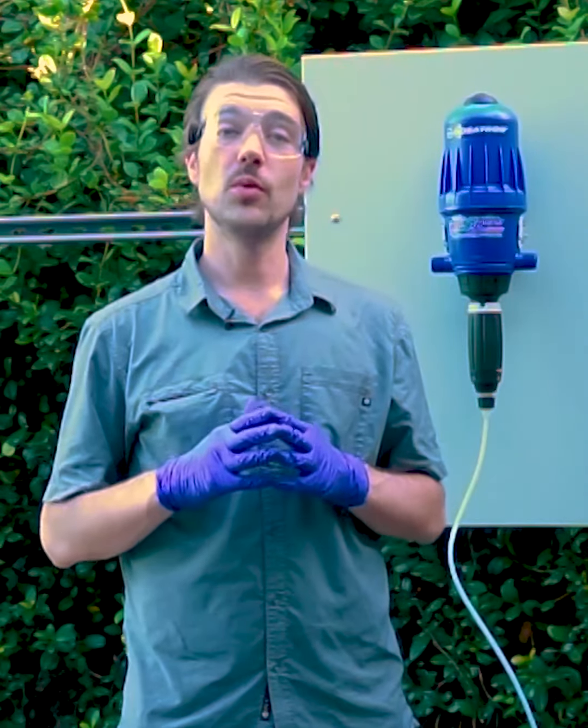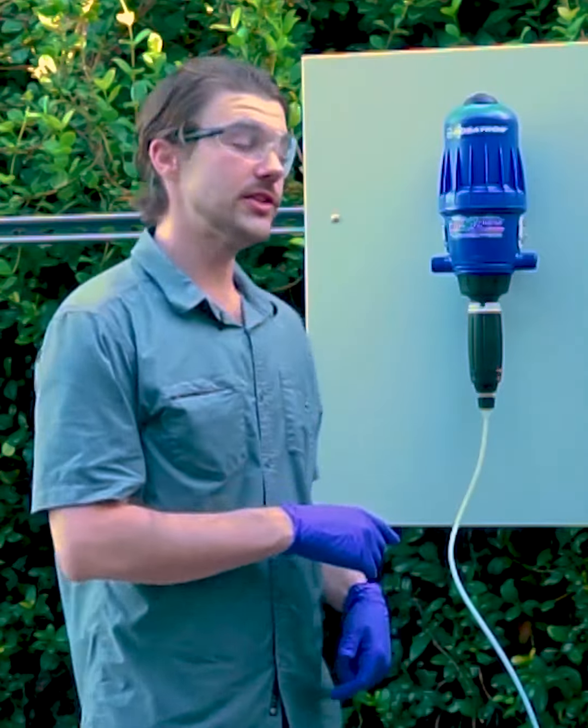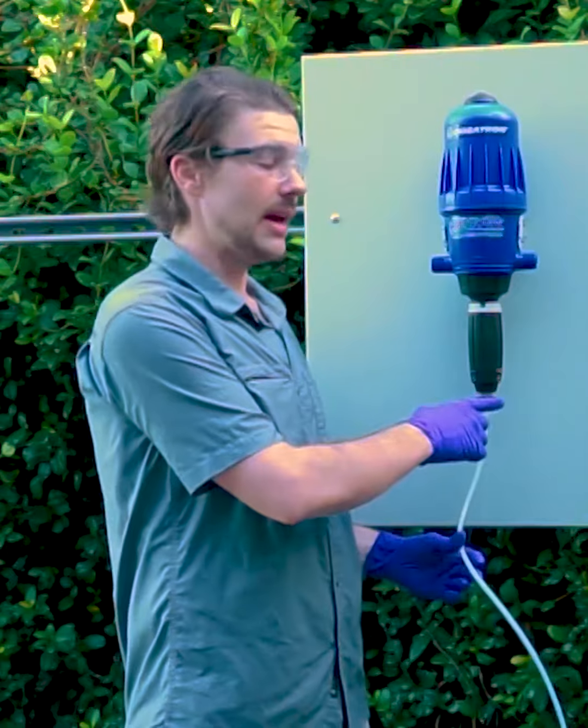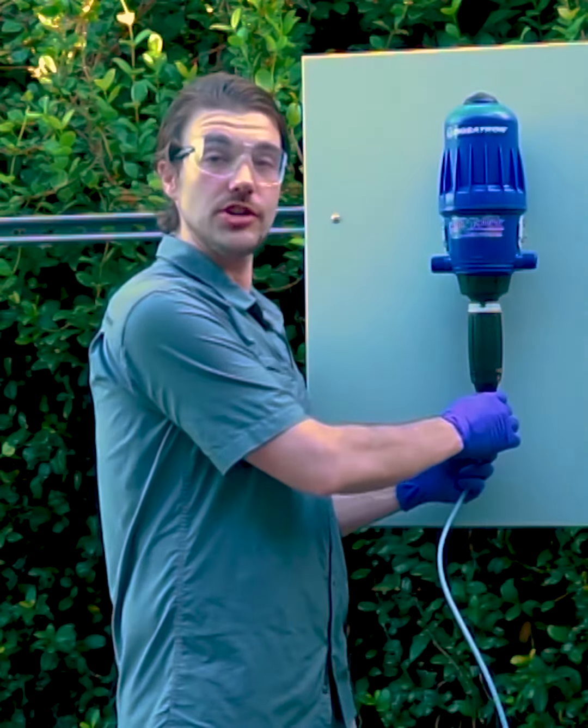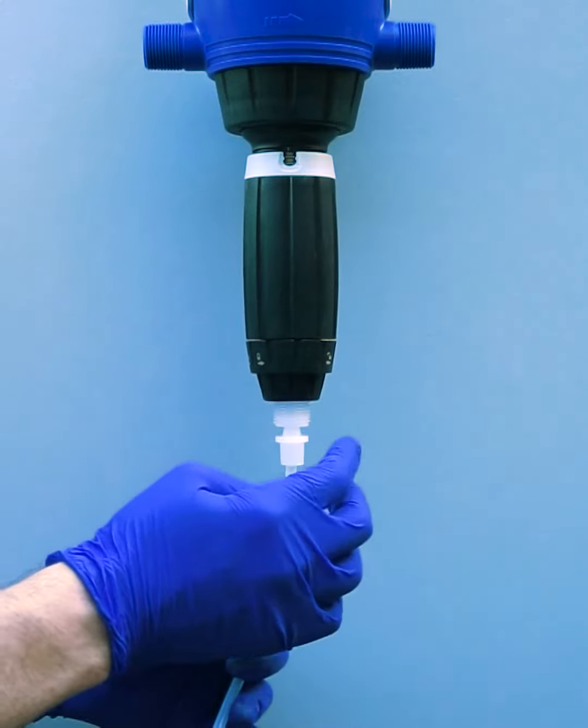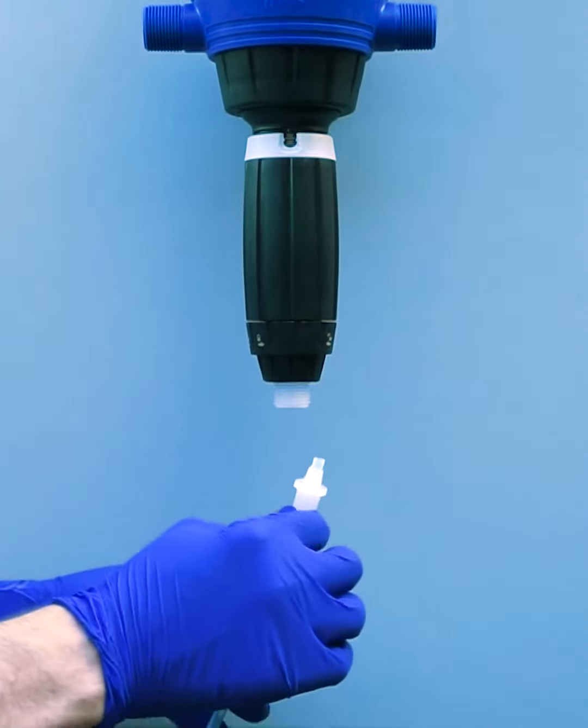So first, what we want to do is come over to the unit and disconnect our injection hose assembly from the unit. To do that, locate the injection hose assembly nut and loosen it, pulling down on the hose and ferrule assembly.